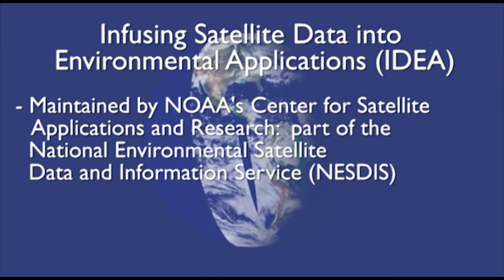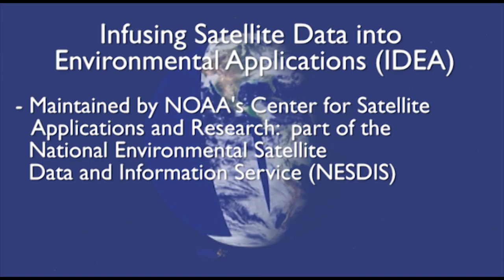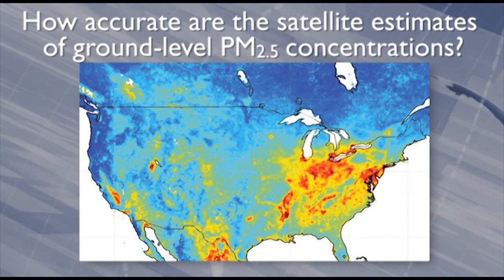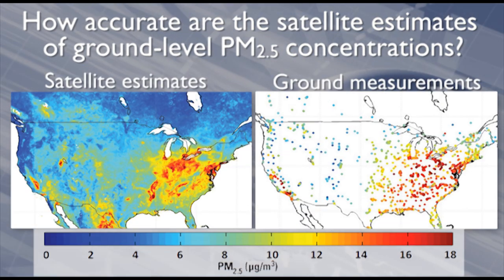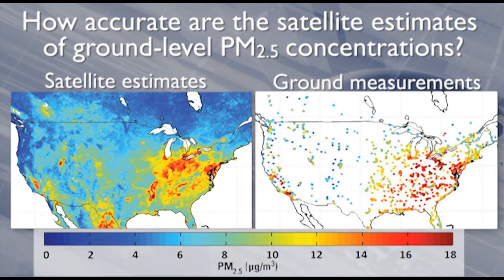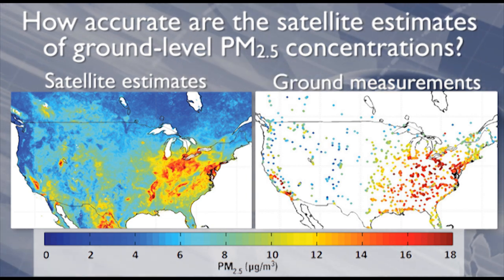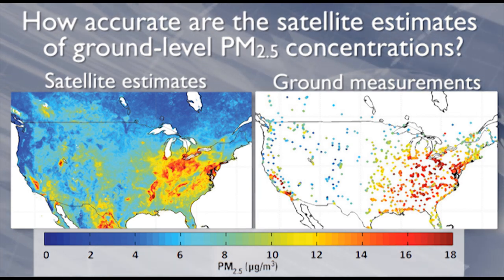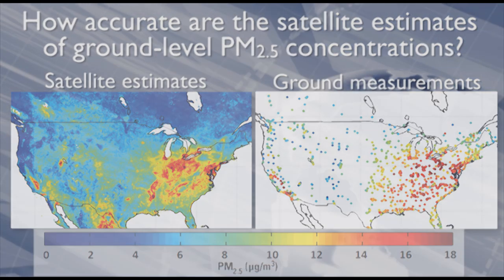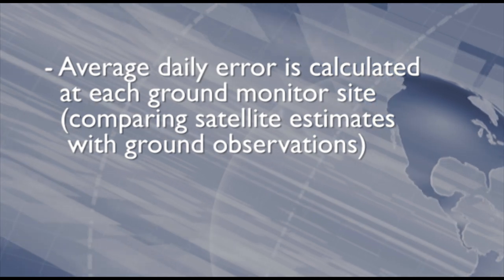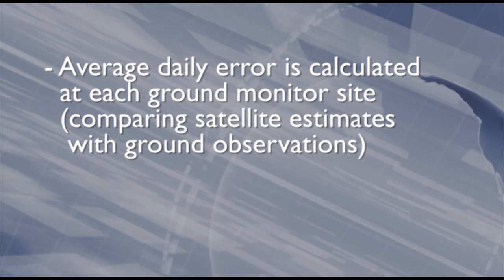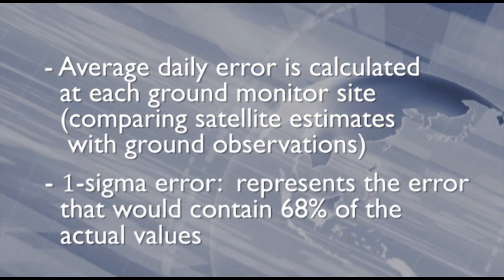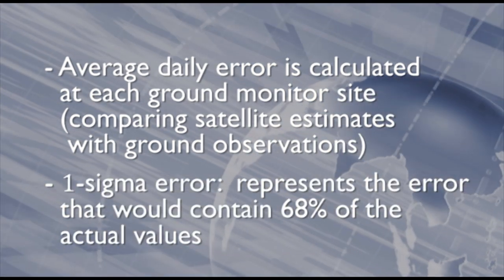How accurate are the satellite estimates of ground-level PM2.5 concentrations? The satellite estimates, averaged over a six-year period, correlate well with ground measurements. However, the satellite-derived values were generally higher than the ground measurement values. Using three years of satellite estimates and ground measurements, an average daily error is calculated at each ground monitor site. One way to express this error is to report one sigma error, which represents the error that would contain 68% of the actual values.